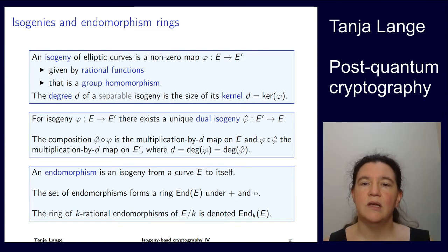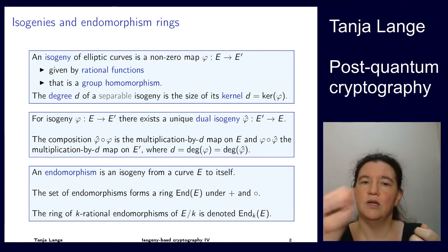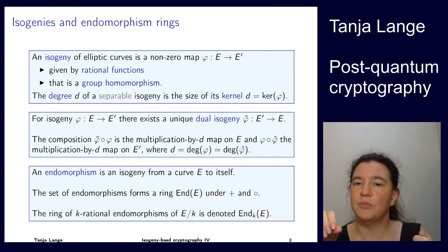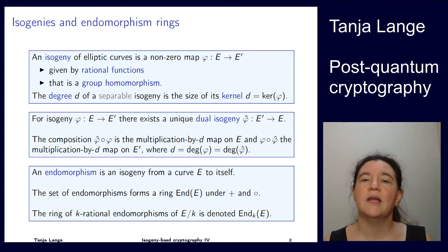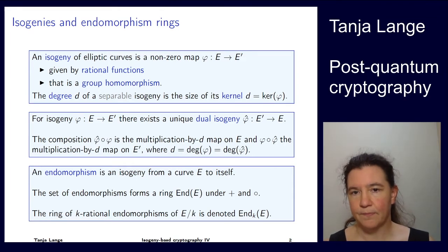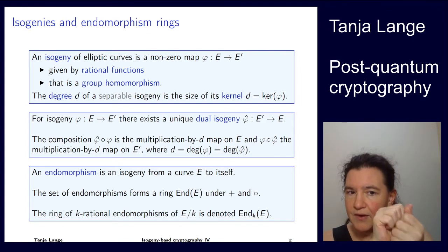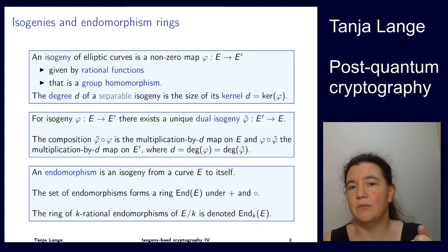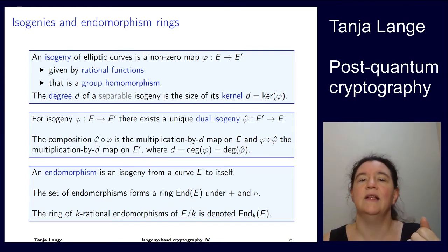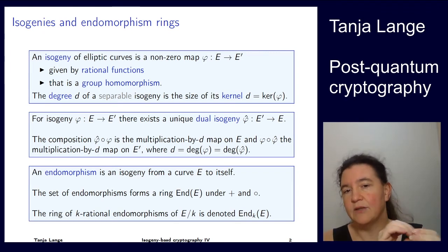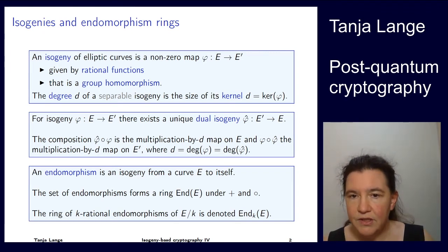The kernel is some group of size D, and that's the same D that defines this dual isogeny. So you're going from E to E prime and back to E, and what you've multiplied by is D — you've taken each point D times itself. If a point has order D, then it gets mapped to infinity, because it's already mapped to infinity through phi, and infinity maps to infinity because phi-hat is also a group homomorphism. Similarly, anything that is a point of order D on phi-hat gets mapped to infinity on E.